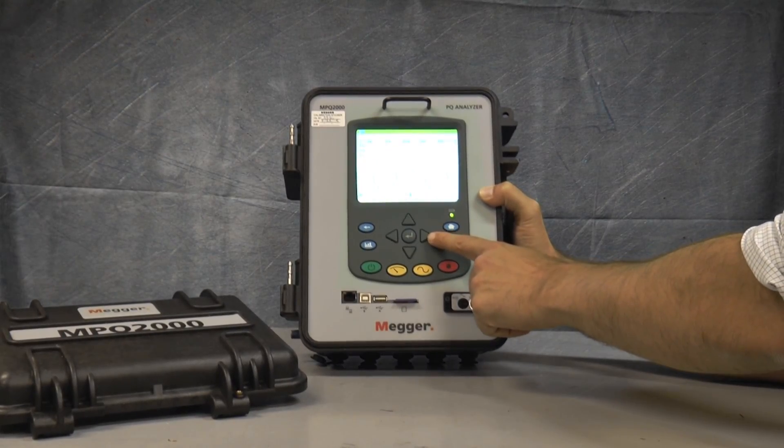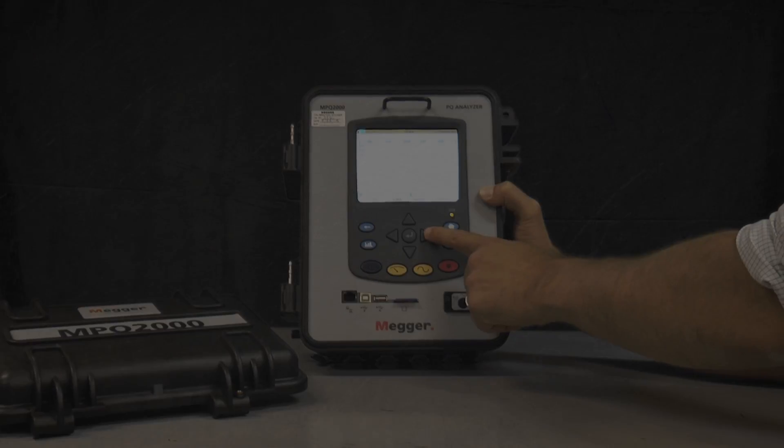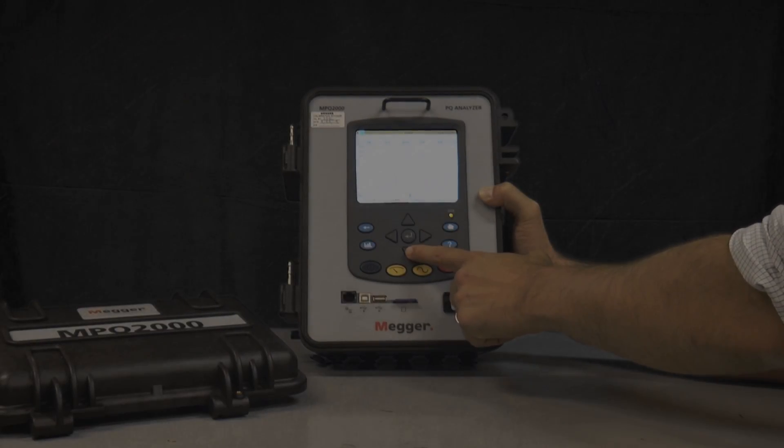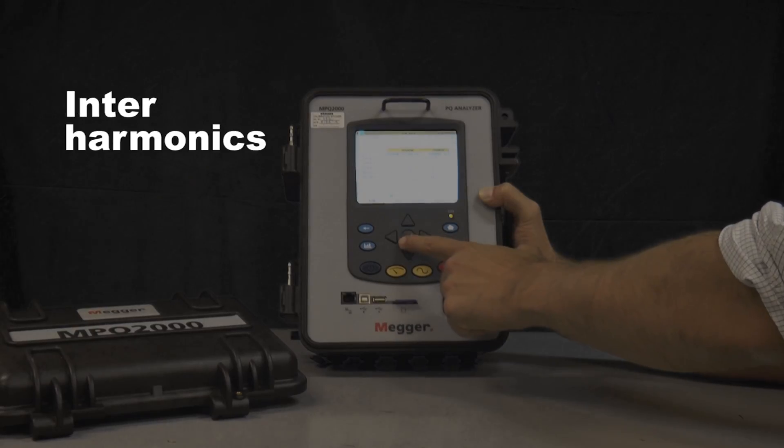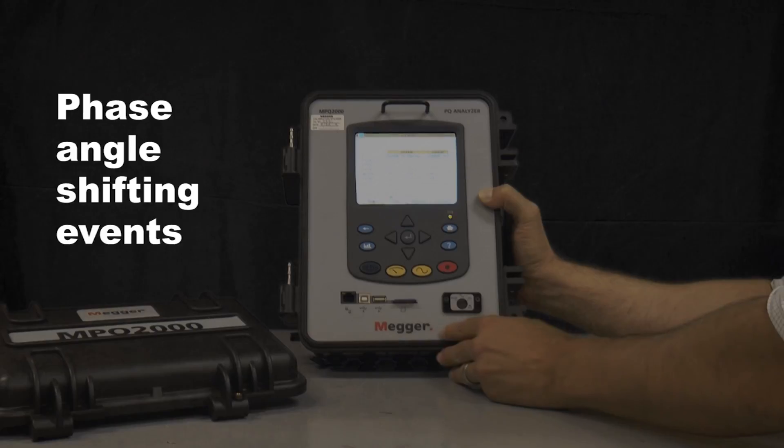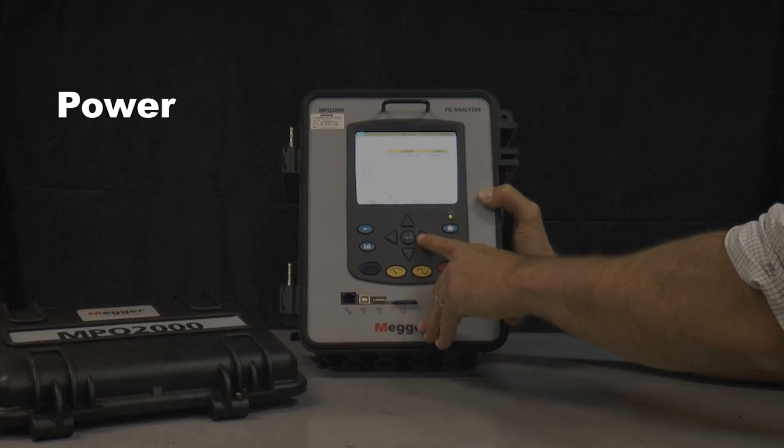Recording parameters such as RMS, dips, swells, transients as fast as one microsecond, as well as harmonics, interharmonics, RVC, main signaling, phase angle shifting events, power, energy, and much more.